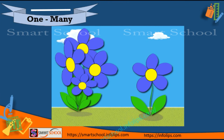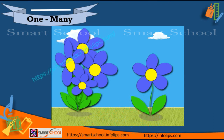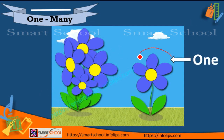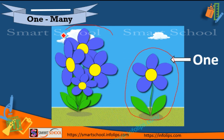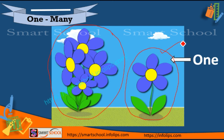Let's see next one. Tell me which is one and which is many. The second one is one and the first one is many. This one flower is called one, and these four flowers are called many.